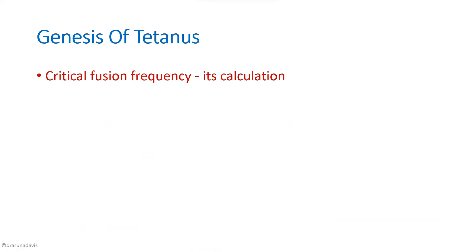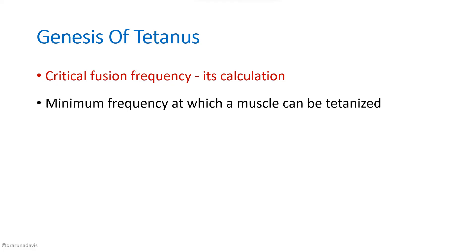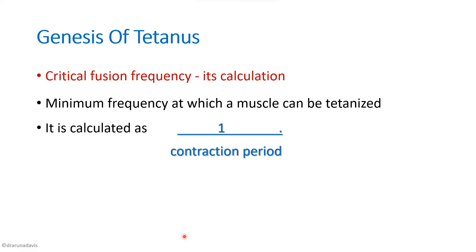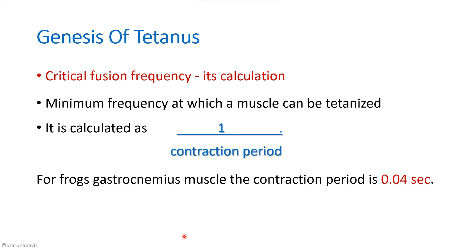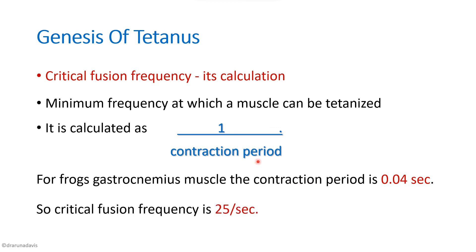Critical fusion frequency is the minimum frequency at which a muscle can be tetanized, calculated as 1 divided by the contraction period. For the frog's gastrocnemius muscle, the contraction period is 0.04 seconds, so critical fusion frequency = 1/0.04 = 25 per second. That is why tetanus was obtained when stimuli frequency was 25 per second in the curve.